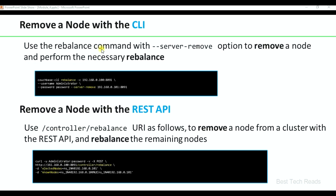We can remove a node using the UI, CLI, or REST API. This is the command to remove and rebalance a node using CLI: use the rebalance command with any cluster node IP and admin credentials, then server-remove specifying the IP of the server you are going to remove.